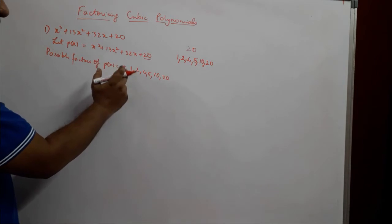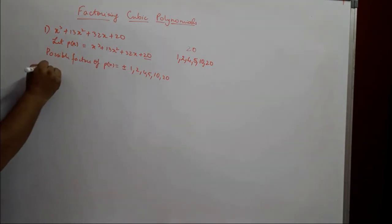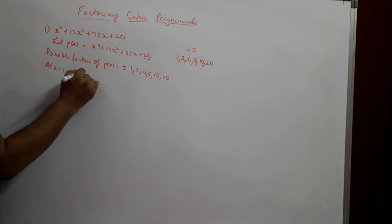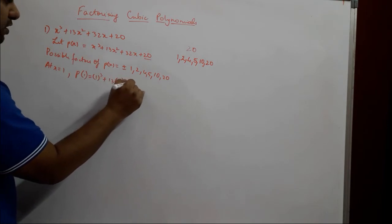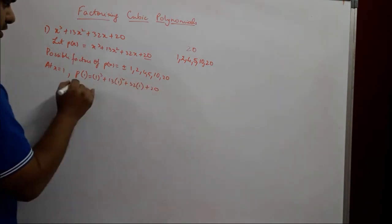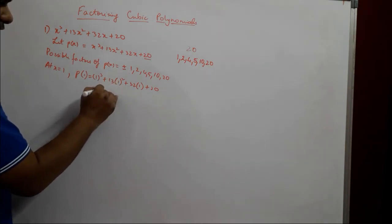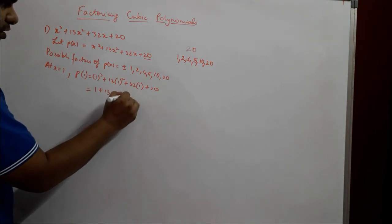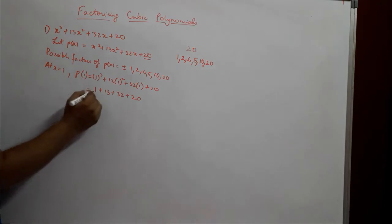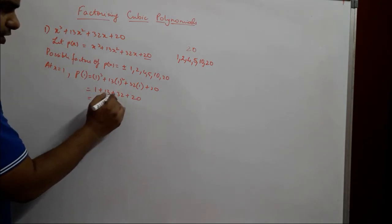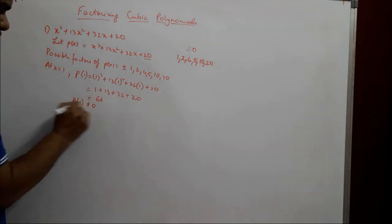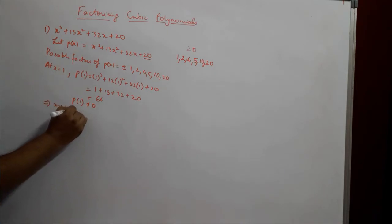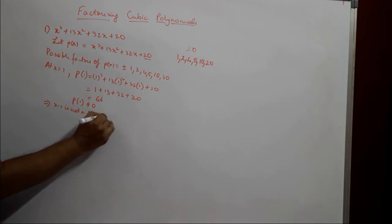At x = 1, p(1) = 1³ + 13×1² + 32×1 + 20 = 1 + 13 + 32 + 20 = 66. So p(1) is not equal to 0, which implies that (x − 1) is not a factor of p(x).